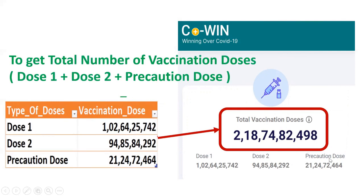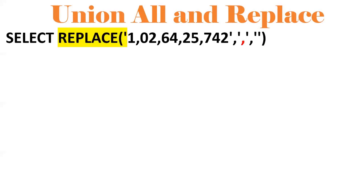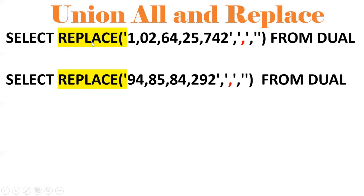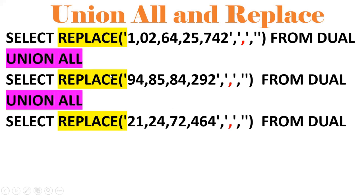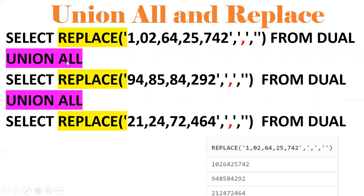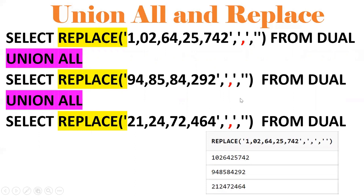Now let's apply these concepts to the COVID dashboard requirement. I want to add dose one, dose two, and precautionary dose. Since they are comma-separated values, I can't directly add them. So I use REPLACE to replace the comma with an empty string on each dose column, then use UNION ALL to club all three result sets into a single result. The output will be like 10264 — commas replaced with empty strings, all clubbed into a single dataset.